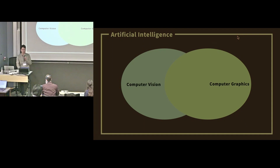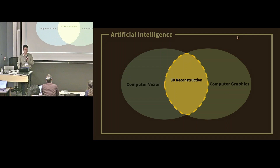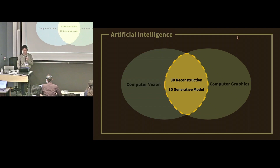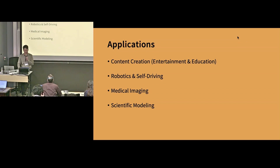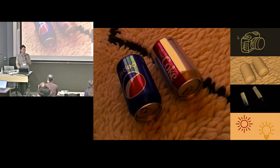My research lies at the intersection of computer vision and computer graphics. More specifically, I do 3D reconstruction, which means you're trying to recover the 3D structures of the world from 2D or 2.5D images. I also study 3D generative models, where you try to come up with new content conditioned or unconditioned on human inputs. Applications include content creation for entertainment or education, robotics, self-driving, medical imaging, and scientific modeling.